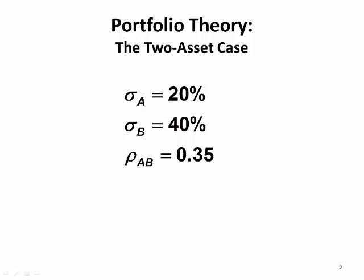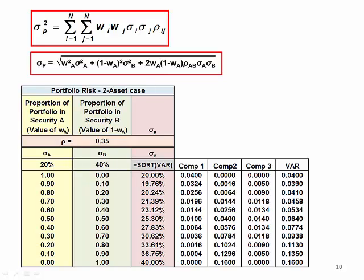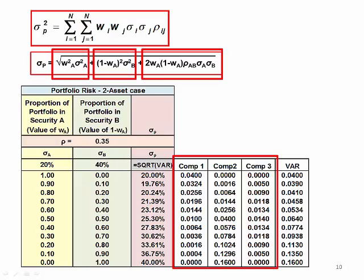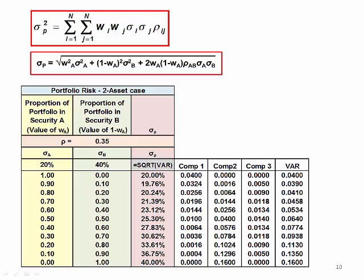Let's walk through an example for a two asset portfolio. Standard deviation of asset A is 20%, asset B standard deviation is 40%, and the correlation between A and B is 0.35. With these three variables we can work out the risk, or standard deviation, of a range of portfolios combining these two assets in varying weights. This slide shows the full expansion for asset A and B from 100% A to 100% B. I've broken the equation down into three components. Trying to pack the whole calculation into one cell in Excel is just too error prone.